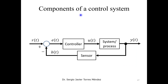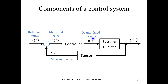In general, a control system has these components: a reference input, a measured value, and a measured error from the difference between the reference and measured value. This error affects the controller, which generates the manipulator variable as an input to the process, producing the control variable as output. We also need to account for perturbation variables, noise, and distortions that the controller must compensate for.